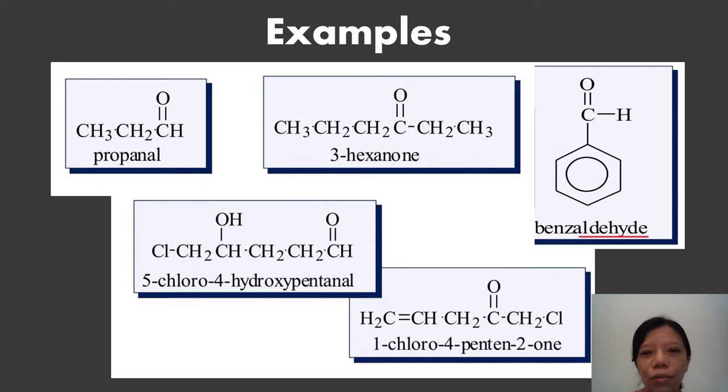As for ketones, the functional group is in the middle, so we have to number the functional group. Give the lowest number, so it's 1, 2, 3. With the lowest number, so don't start from here, start from the right side. So it's 3-hexanone. Then the substituents follow the alphabetic order. So chloro first, then hydroxy plus.